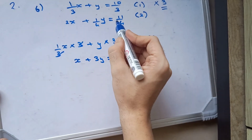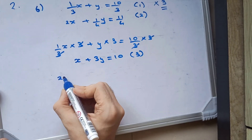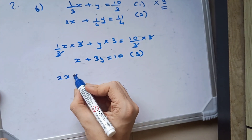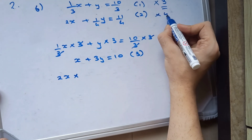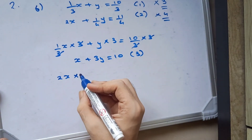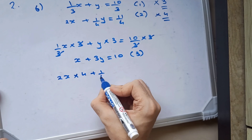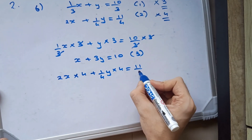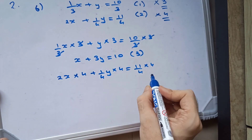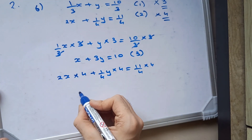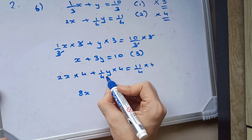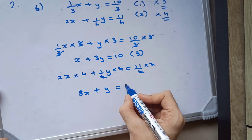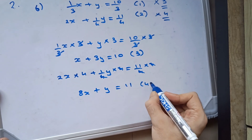Same thing with the second equation — 2x here has denominator 4, so we will multiply the entire thing by 4. So 2x into 4 plus 1 upon 4 times y into 4, which is equal to 11 upon 4 into 4. Here we will get 8x; the 4s cancel and we get y; and the 4s cancel and we get 11. This is the fourth equation.